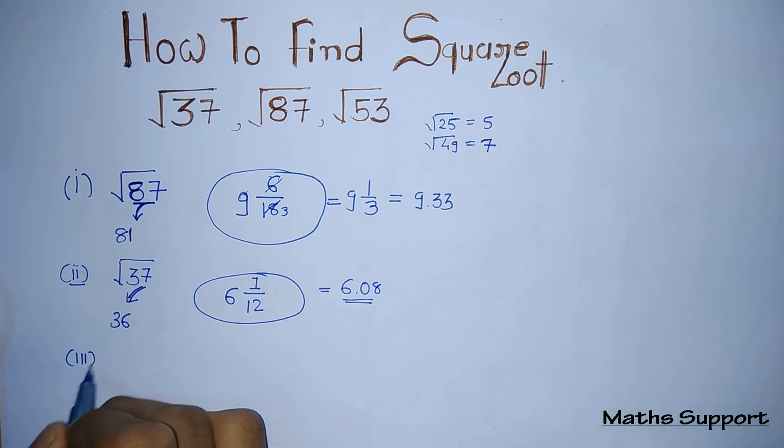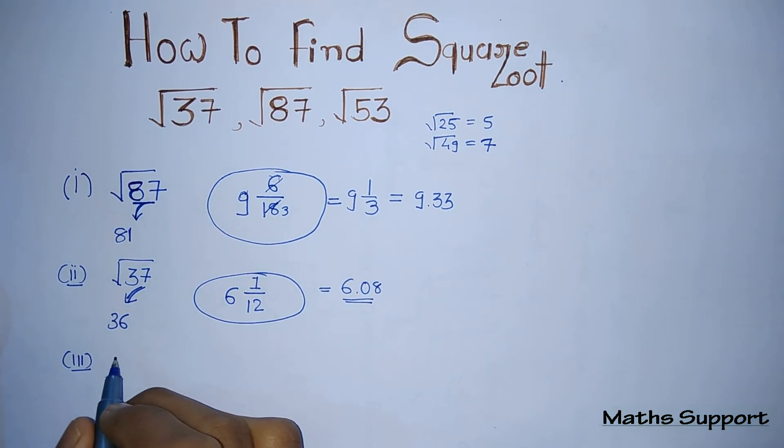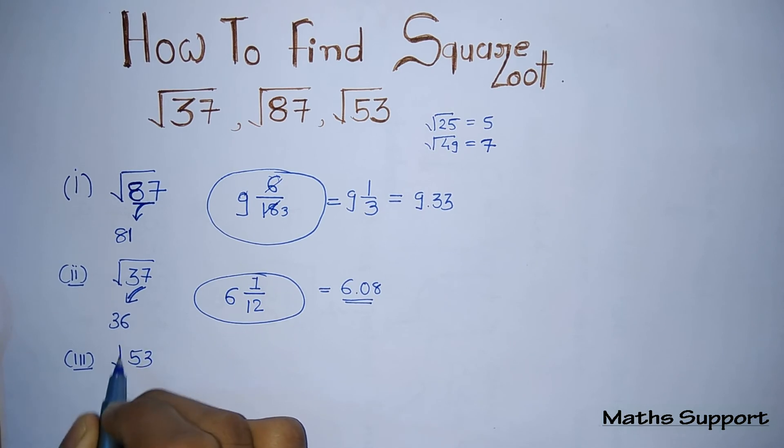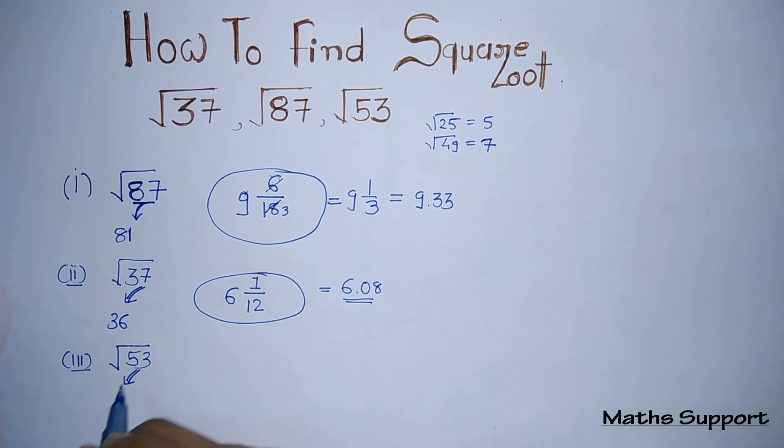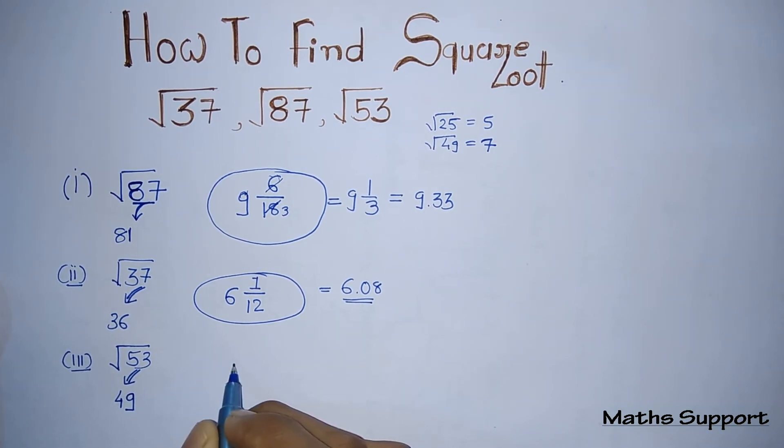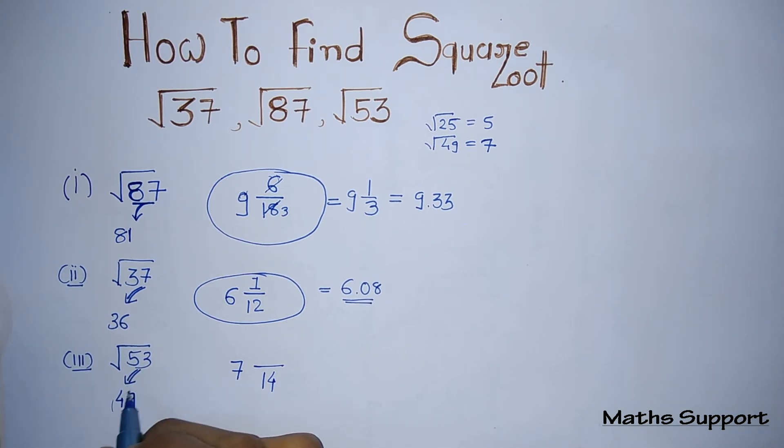Suppose you are given a third number, that is 53. First, find the perfect square number nearer to this, that is 49. Put the square root of 49, that is 7. In the denominator, double this value, that is 14. In the numerator, put the difference of these two numbers, that is 4.